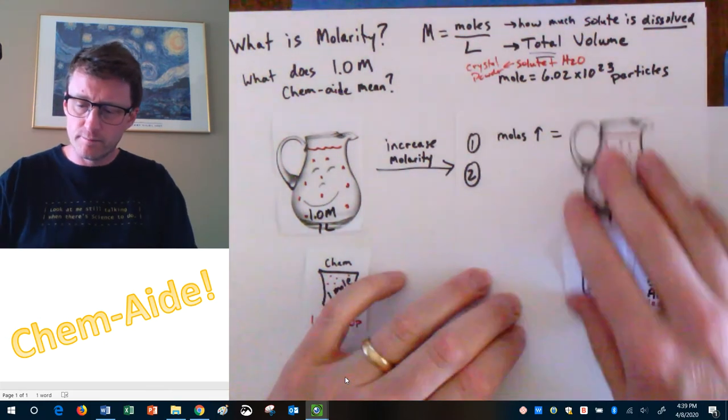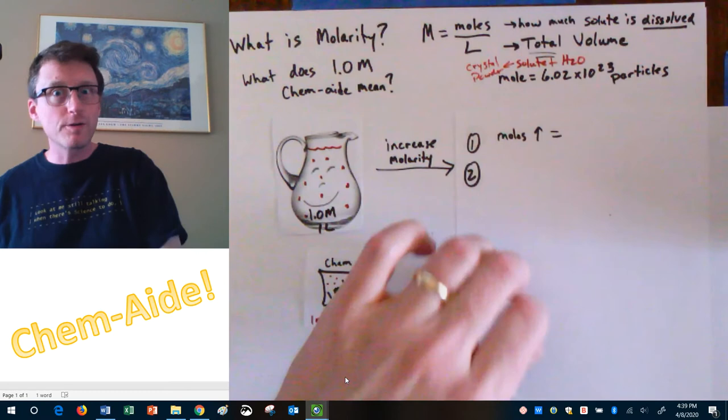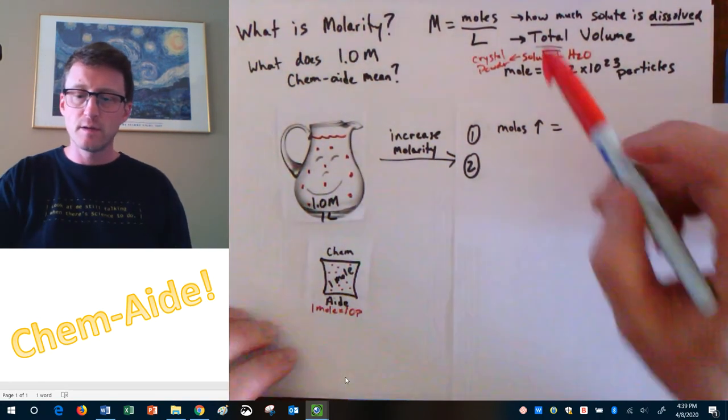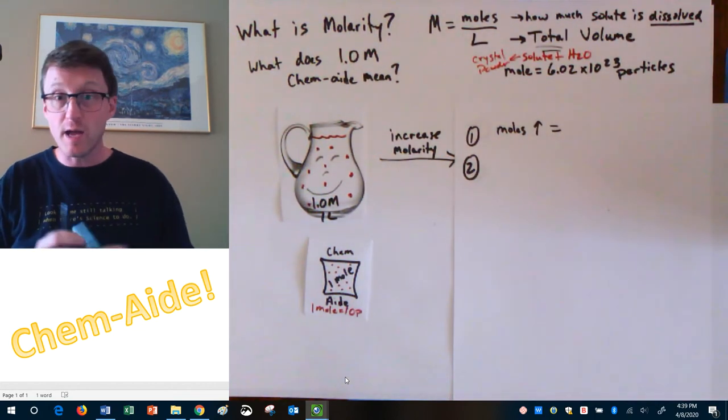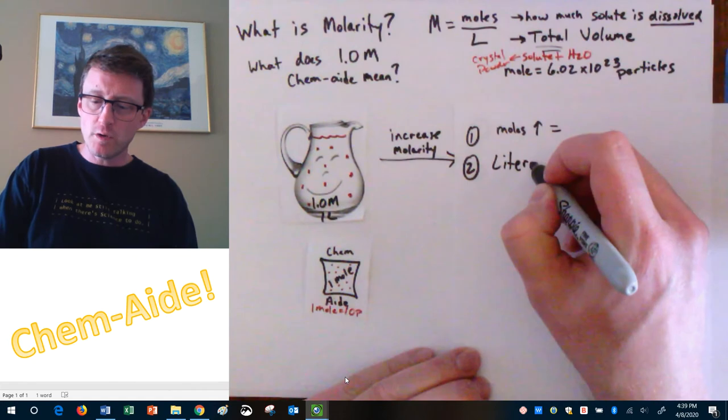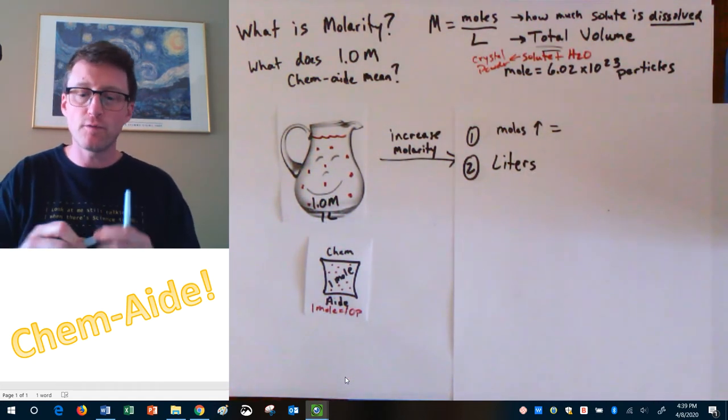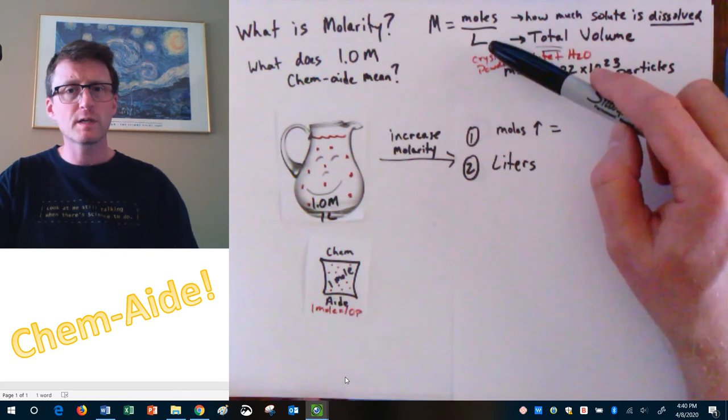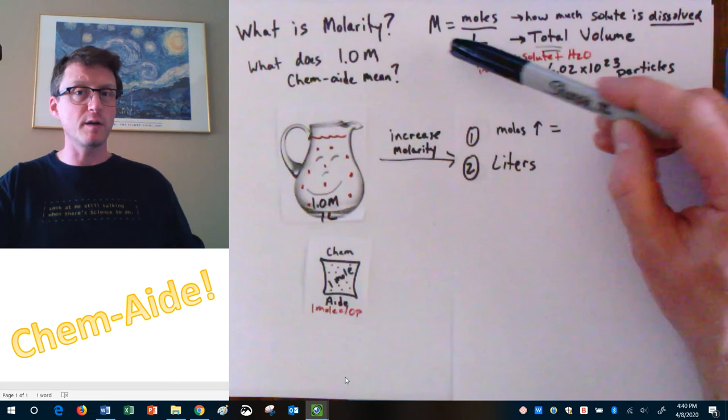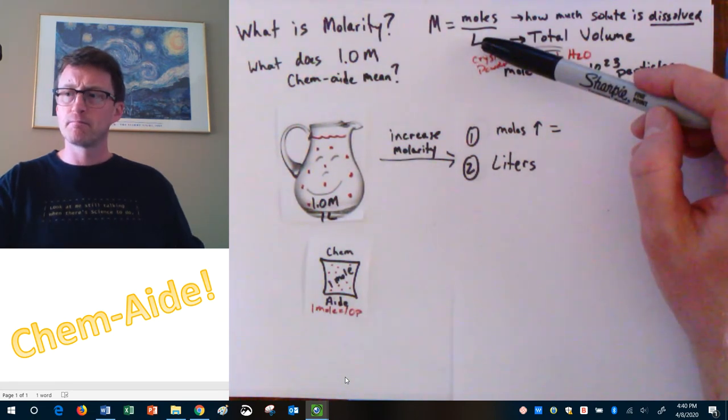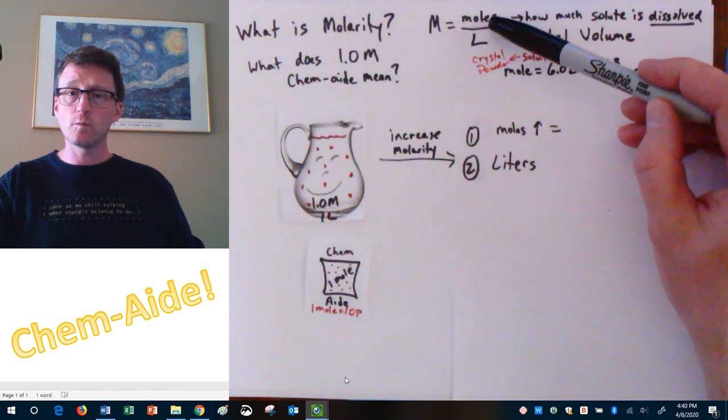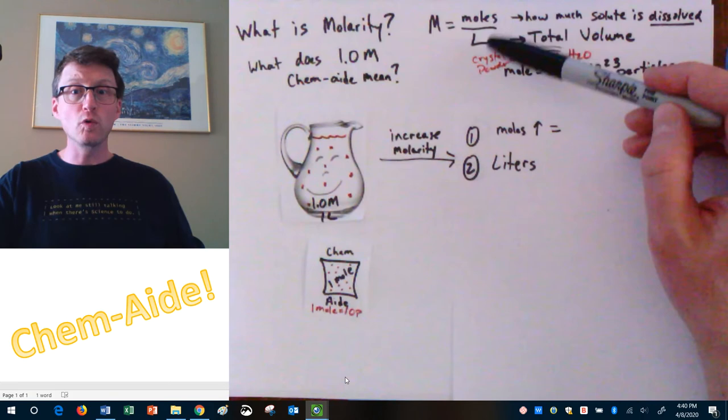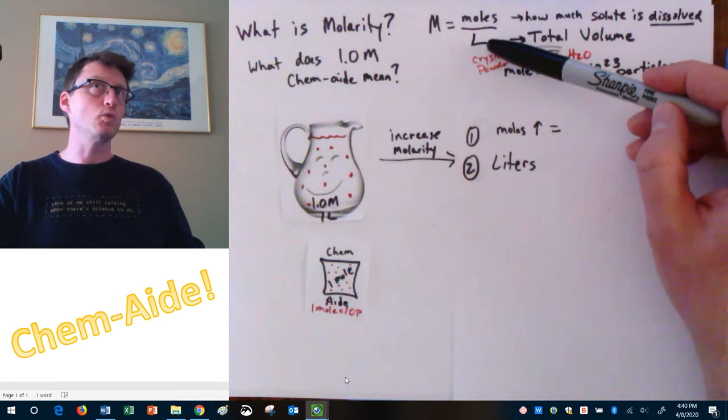Now, what is another option for us? If we didn't want to change the number of moles, how could we increase the molarity? Well, again, look at the equation for molarity. Molarity is moles divided by liters. What is my other option? I have liters. What could I do to the liters to make my answer for M get bigger? It's on the bottom of the fraction. What type of number gives a big answer when it's on the bottom of the fraction?